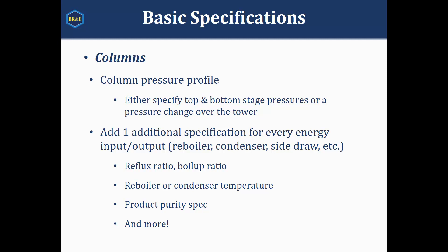From there, we're going to have additional specifications depending on what energy inputs and outputs we have in our system. For every reboiler, condenser, side draw, etc., we're going to be given a degree of freedom to set some other type of specification. These specifications can be as simple as reflux ratios, boil-up ratios, or temperatures around our reboiler and condenser, maybe a product purity spec, and there are many more options available as well. Going back to that idea — you get one specification for every energy input or output into your column.